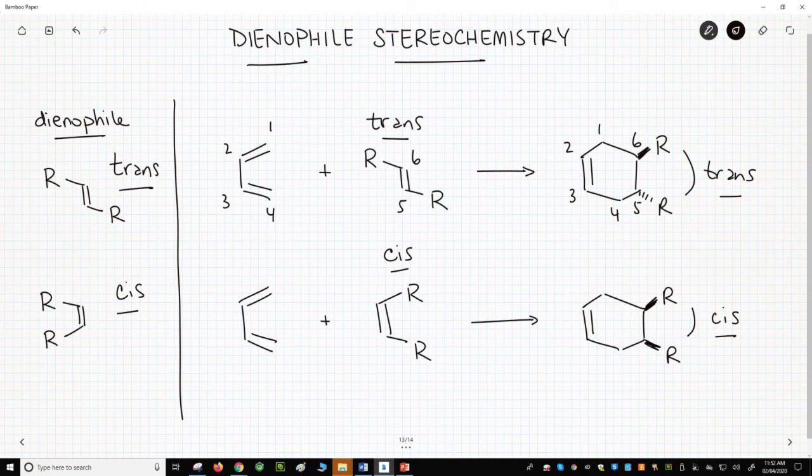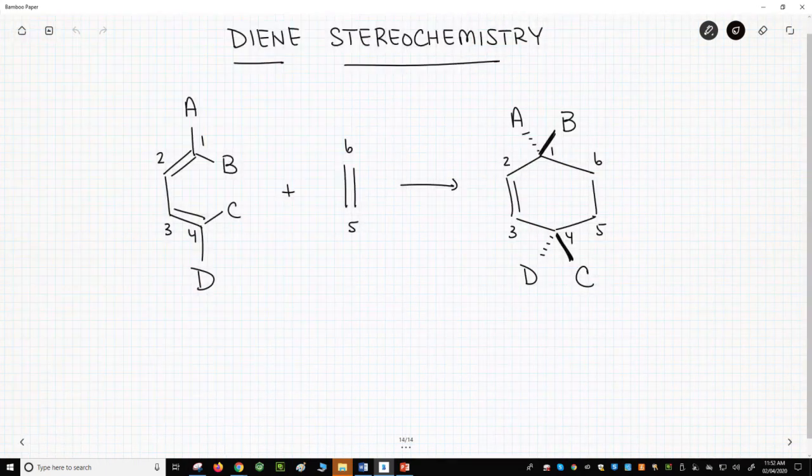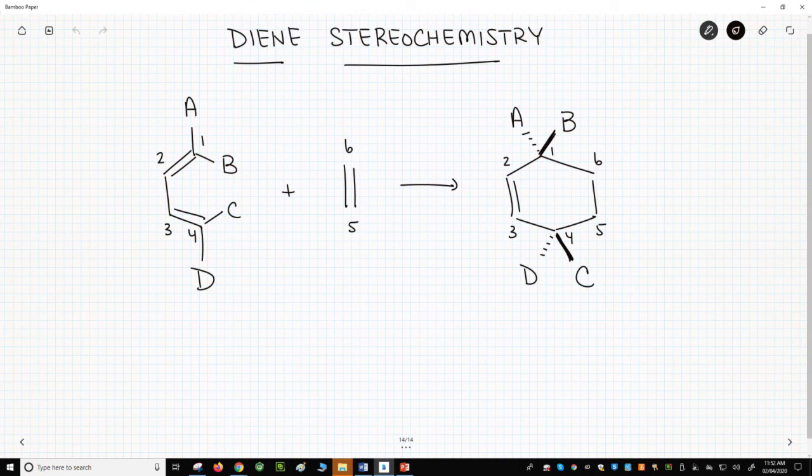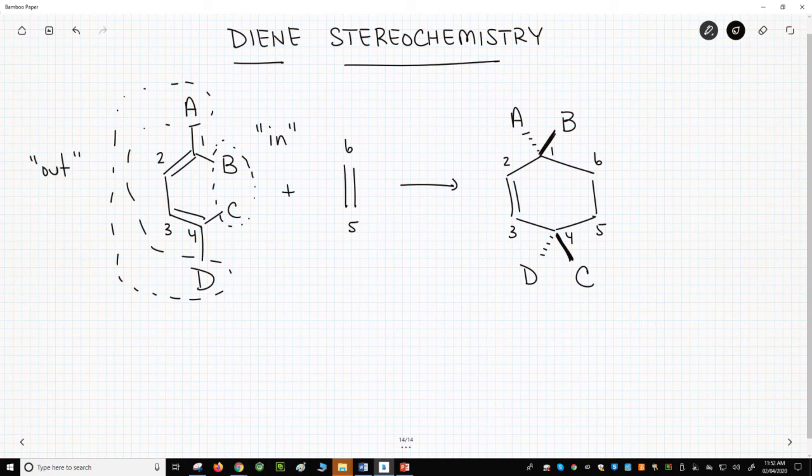How about the diene? The stereochemistry of the diene is less obvious. When drawn in its S-cis conformation, as we have on the screen, I tend to refer to groups as being either in or out. The in groups point to the inside part of the molecule. The out groups stick out.